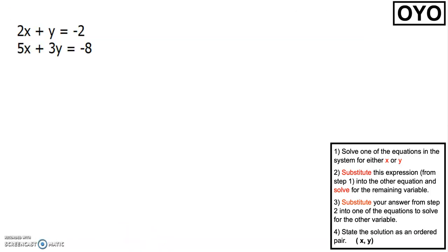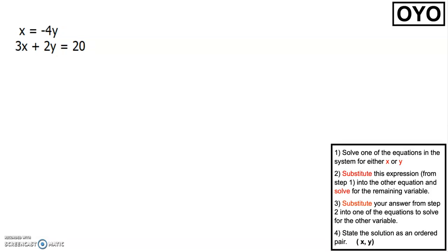This next problem is on your own — look at the system and decide what equation would be easiest to perform step one with, then try to solve for one of the variables. The following problem is also on your own; notice that x is by itself.